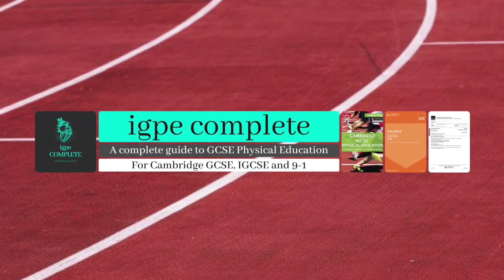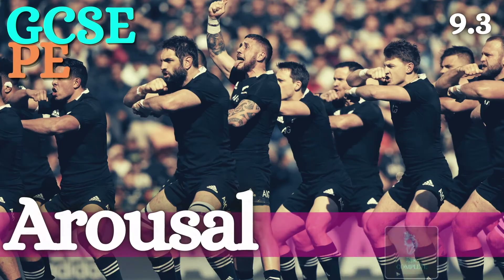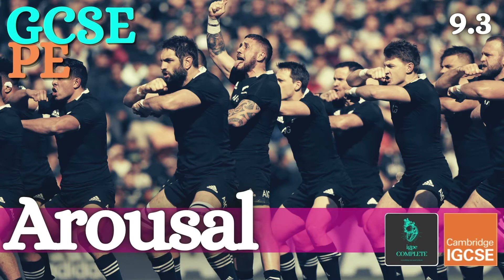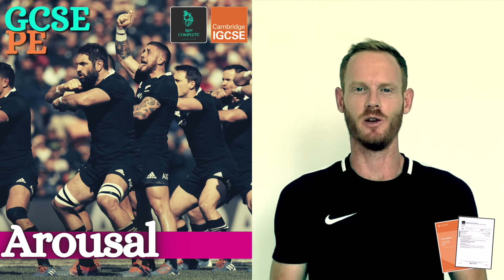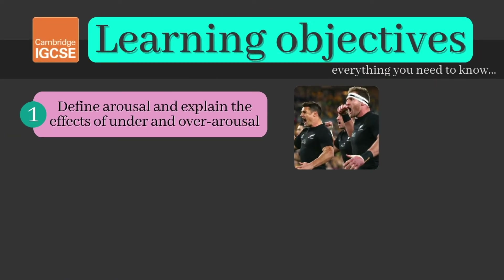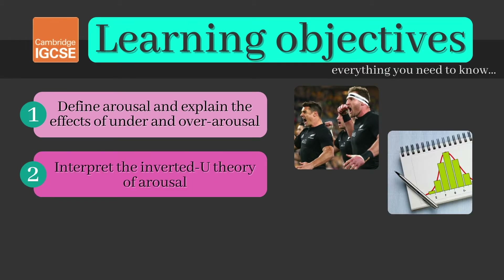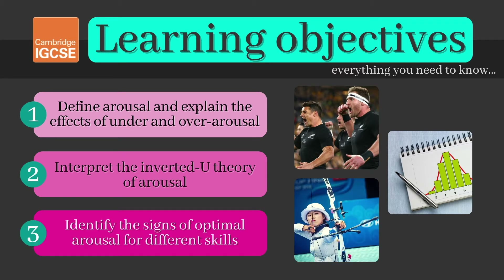Hello and welcome to another complete Cambridge IGCSE PE lesson — the third topic in Chapter 9: Arousal. As always, we'll cover everything you need to know for your exam. Today you need to be able to define arousal and explain the effects of under and over arousal, interpret the inverted U theory of arousal, and identify the signs of optimal arousal for different skills.